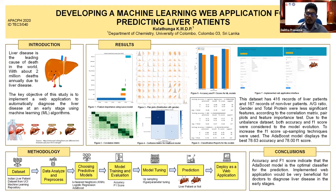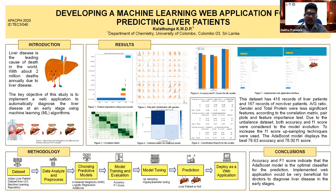Due to the unbalanced dataset, both accuracy and F1 score were considered. F1 score is used when false negatives and false positives are critical — in other words, cases of patients who actually have the disease but are predicted as non-liver patients are very critical. If the false positive and false negative rates are high, precision is very low, so upsampling methods were used to increase the F1 score. According to the results, the AdaBoost model achieved the best 78.63% accuracy and 78.0% F1 score compared to the other models.